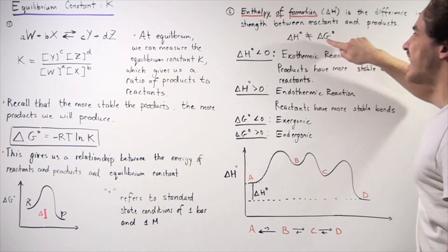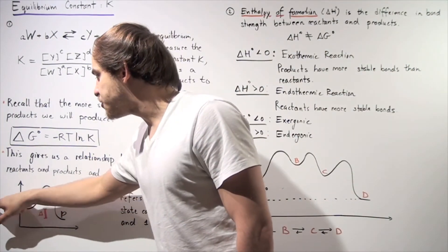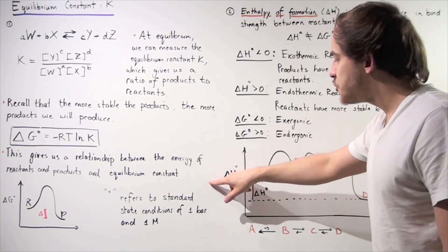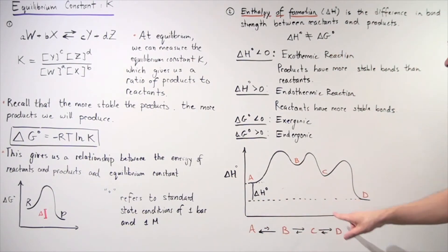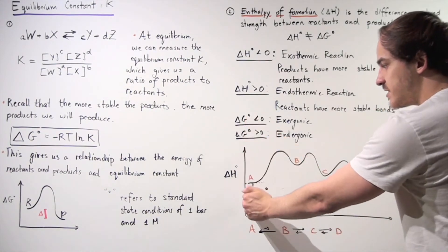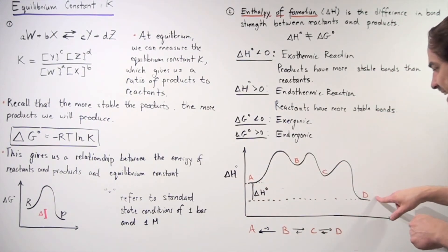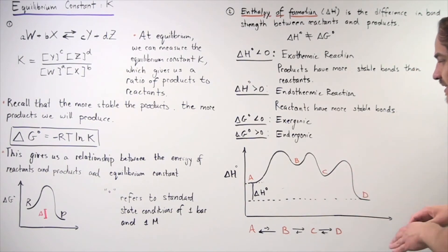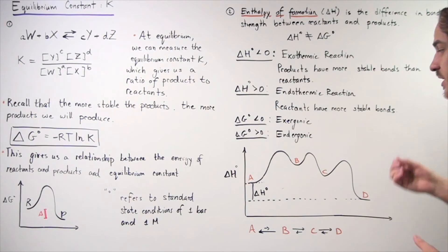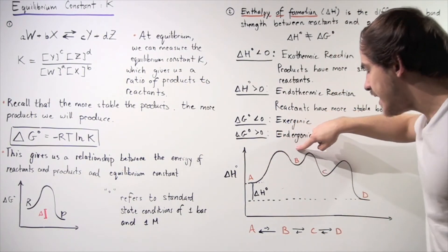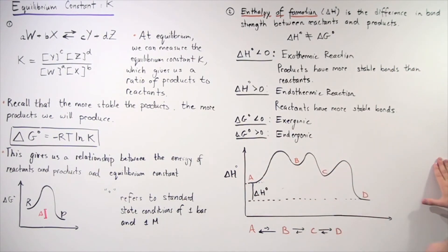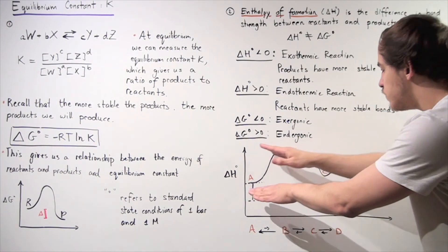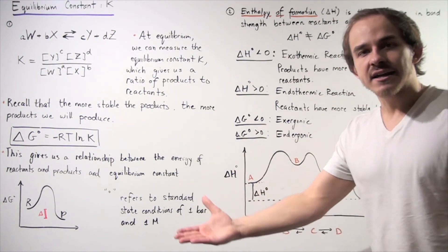Consider the following reaction in which A becomes B, then becomes C, and becomes D. Notice this energy diagram uses change in enthalpy. When we go from A to D, there is a negative overall change in enthalpy, meaning the bonds produced in D are more stable than the bonds in A. Notice that when we go from A to B, our ΔH is positive — that step is endothermic. But as long as the overall change in H is negative, this reaction will be very likely to proceed, meaning our overall reaction is exothermic.